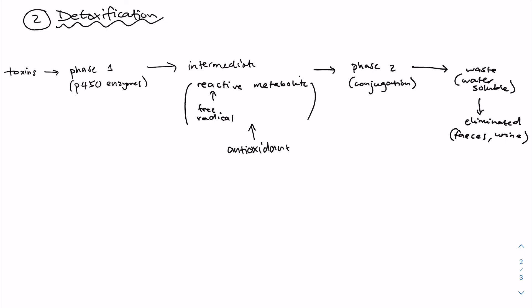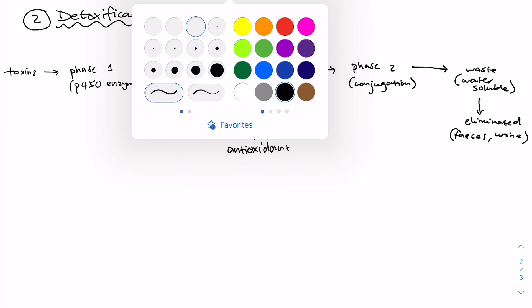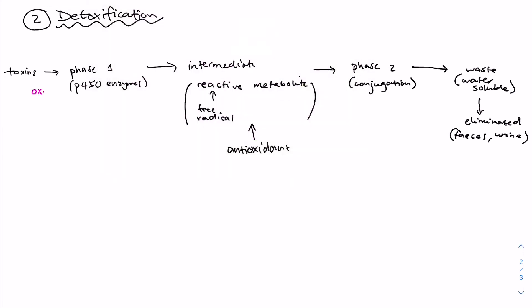So toxins are converted into less harmful substances via oxidation, reduction, and hydrolysis reactions. The reactions are mediated by a group of enzymes known as cytochrome P450 enzymes.